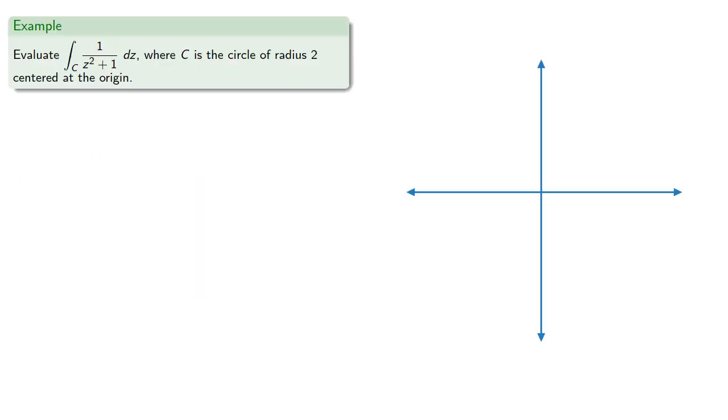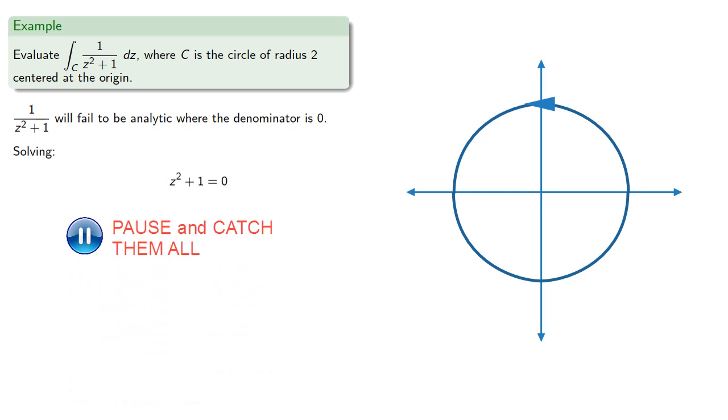For example, let's consider this integral where our path is the circle of radius 2 centered at the origin. We note the integrand will fail to be analytic where the denominator is 0, so solving, the bad places are at z equal to plus or minus i.